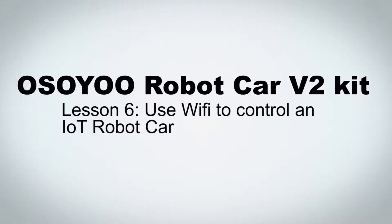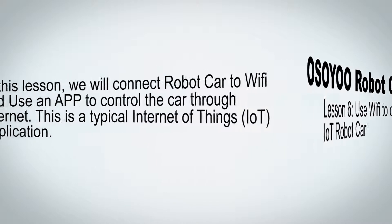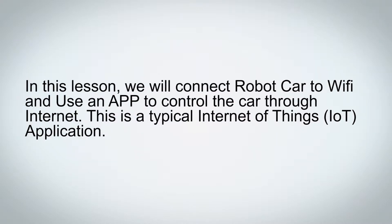Welcome to the sixth lesson of OSIO Robot Car V2 Kit. In this lesson, we will connect the robot car to Wi-Fi and use an app to control the car through the Internet. This is a typical Internet of Things application.